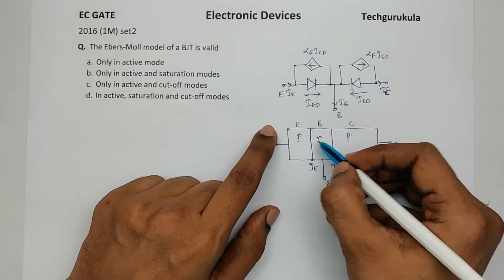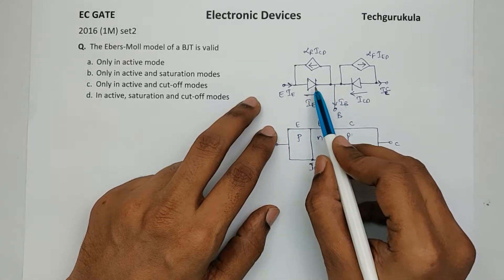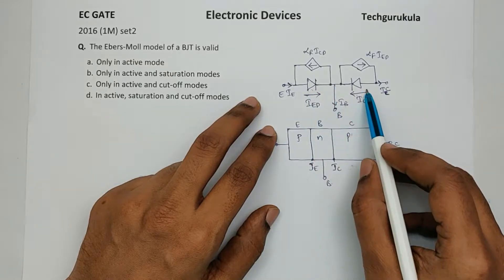In Ebers-Moll model, these two junctions are modeled like two diodes. One is emitter diode and another one is collector diode.